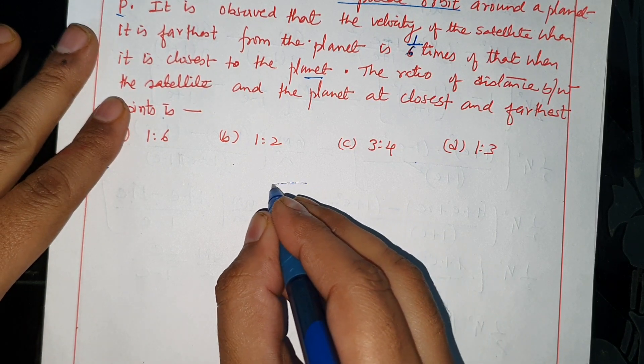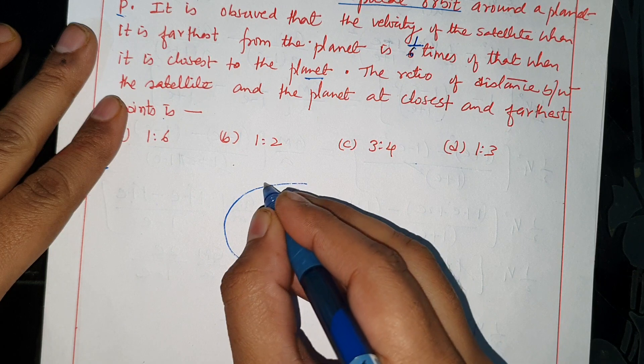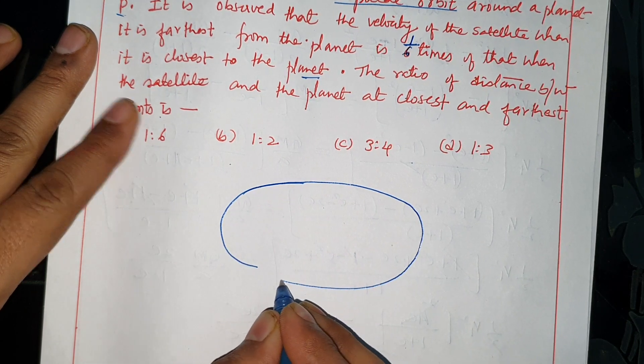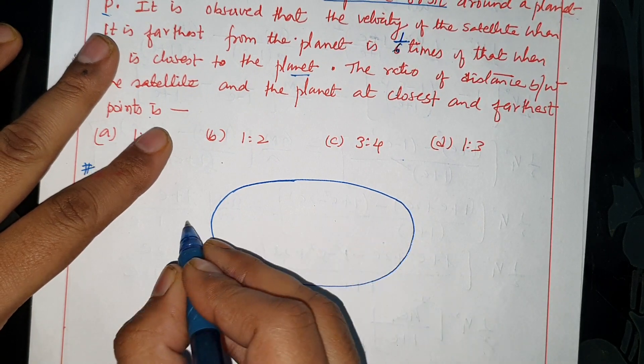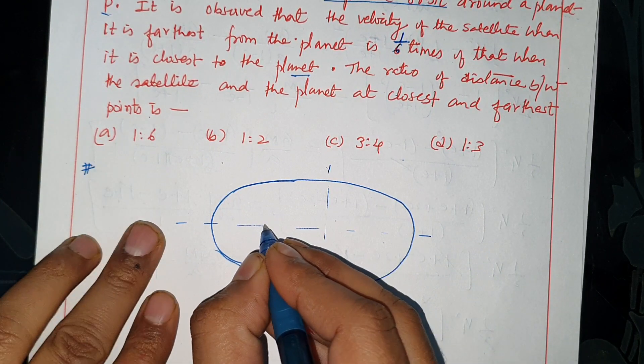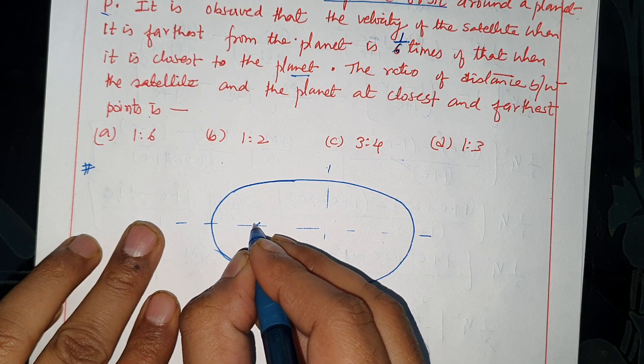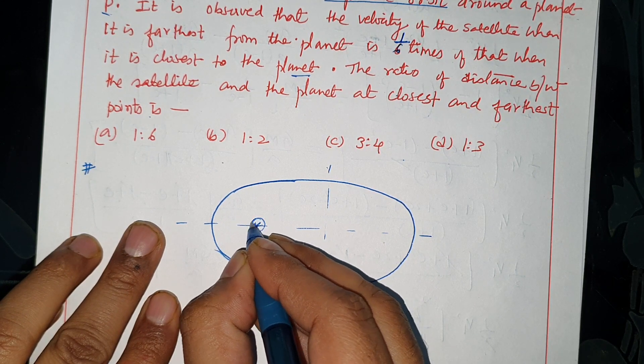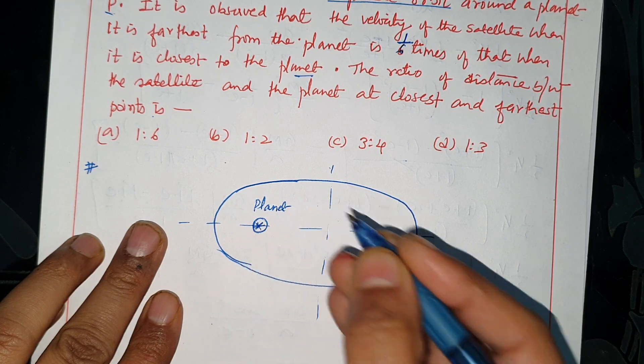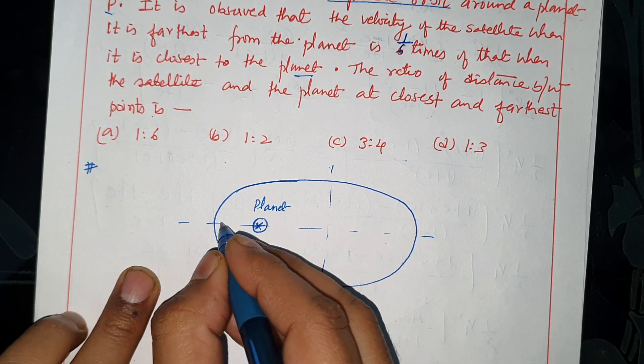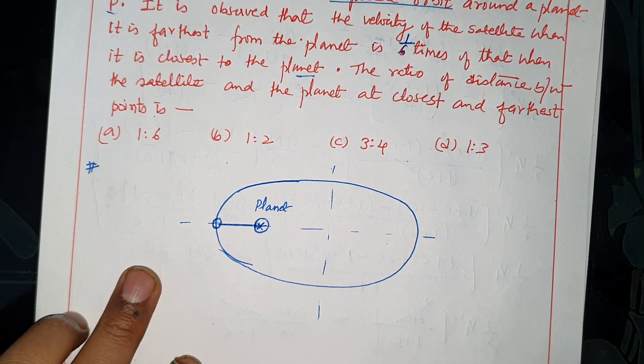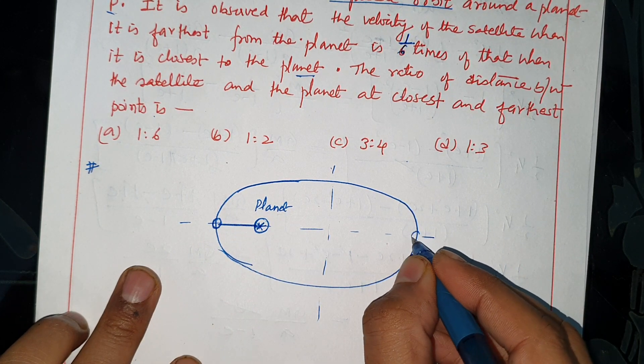This is an elliptical path with two foci and the planet. This is the planet. A satellite is at the closest distance or the farthest distance.